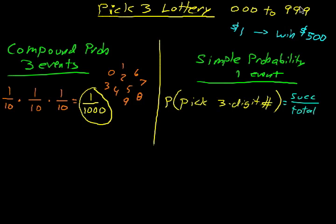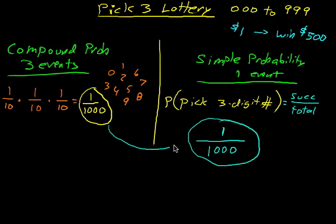Well, it may look like there's 999, but we're including 000. So there's actually a total of a thousand three digit numbers. And you're picking one three digit number. In other words, you are picking one, and there's a thousand possibility. So you have a one out of a thousand chance of picking the three digit number. And please notice that these probabilities are the same.